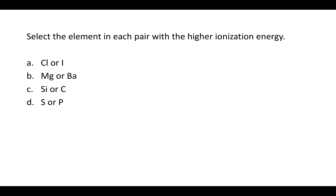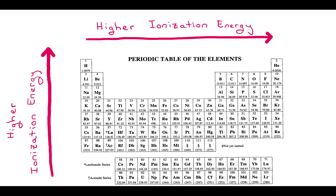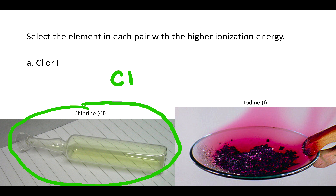The question says: select the element in each pair with the higher ionization energy. Which has a higher ionization energy — chlorine or iodine? If you look on the periodic table, chlorine is in the top right. Below it is iodine. Because chlorine is higher up, it has a higher ionization energy. It's harder to rip an electron off of a chlorine atom than off of an iodine atom.